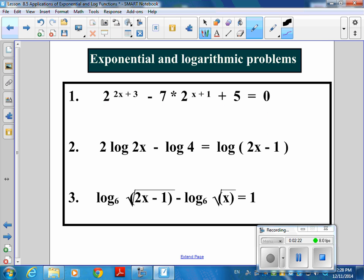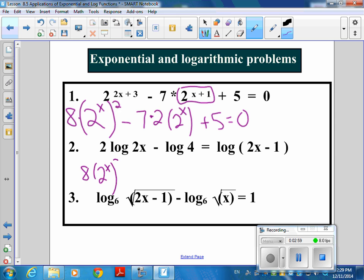So now, I have 8 2 to the, instead of 2 to the 2x, I'm just going to call it 2 to the x squared. And then, how many 2 to the x's is this thing? 2, but it's times 7, right? And then, plus 5, right? Yeah, quadratic.